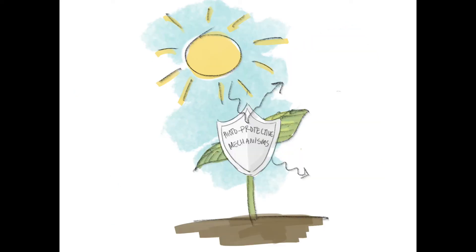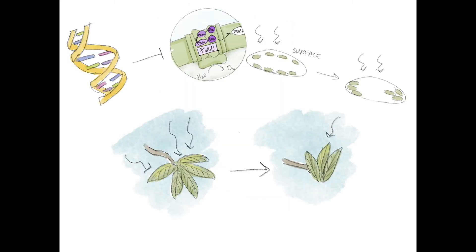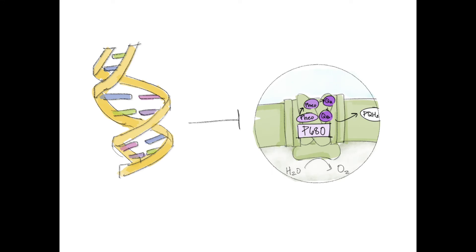To prevent the formation of ROS, plants have developed several photoprotective mechanisms. These mechanisms occur on varying scales, from gene regulation to macroscopic physical changes. For example, plants can down-regulate the expression of antenna proteins, reaction centers, and electron carriers to reduce the amount of energy being absorbed by their photosystems.